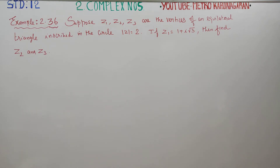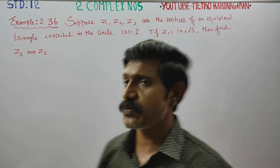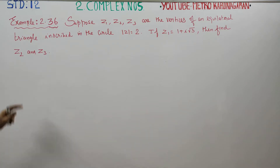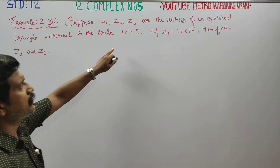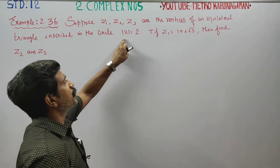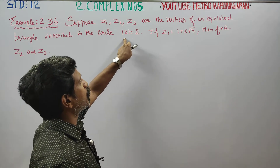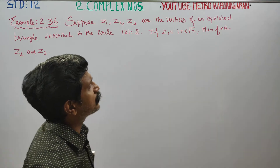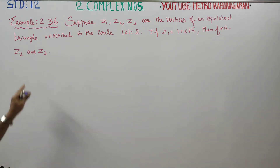Dear 12th standard students, in complex number Example 2.36, z1, z2, z3 are the vertices of an equilateral triangle inscribed in a circle of modulus z equal to 2. If z1 is equal to 1 plus i root 3, then find z2 and z3.